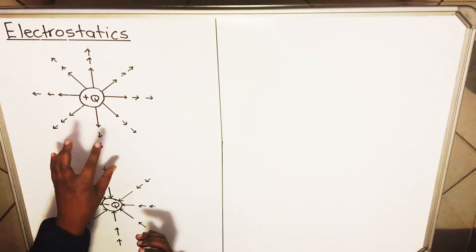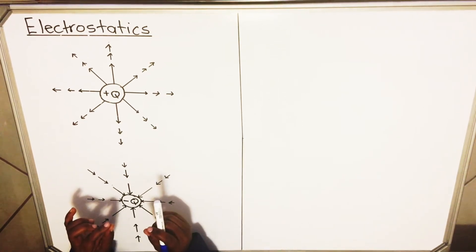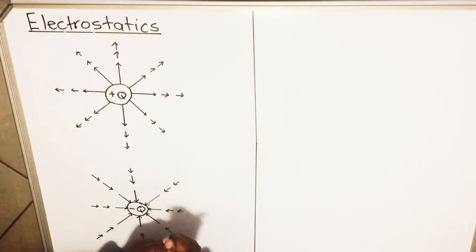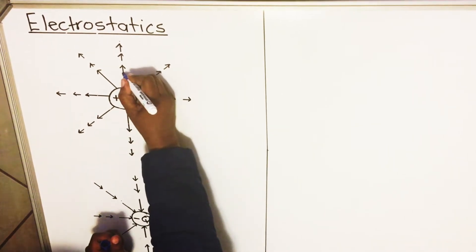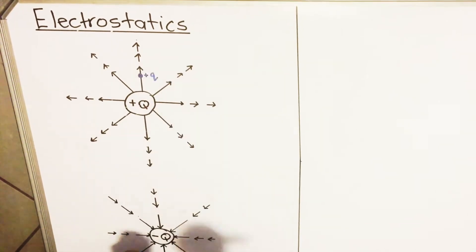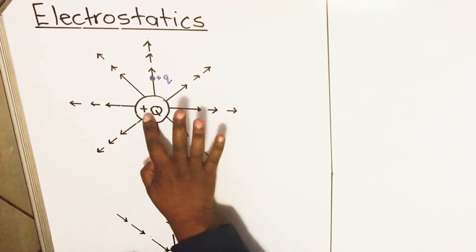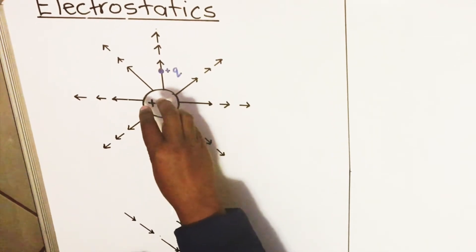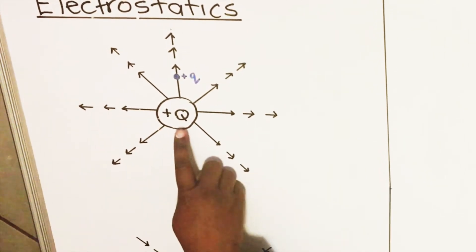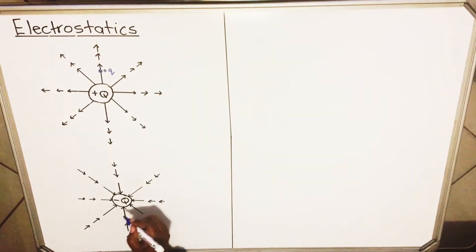The first thing to look at in these drawings is electric fields. An electric field is a region where an electric charge will feel a force. These lines show the electric field for a charged object. If I place a small positive test charge on or near a positively charged object, it will experience a force and move away, because electric field lines for a positively charged object move away from it.